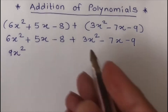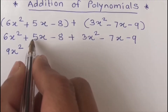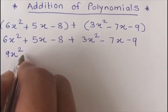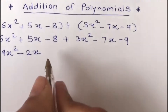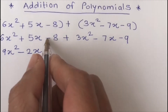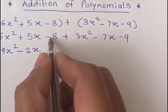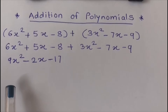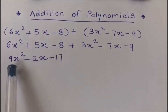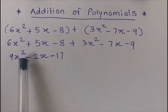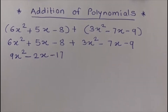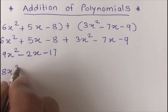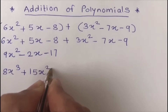Now we have the x terms: 5x and minus 7x. Adding plus 5x and minus 7x gives us minus 2x. Finally we have the constant terms: minus 8 and minus 9, which gives us minus 17. So when we add these polynomials we get the answer 9x squared minus 2x minus 17. Let's take the next example.